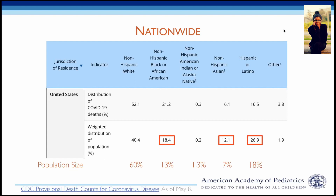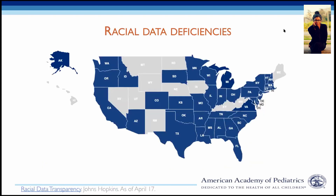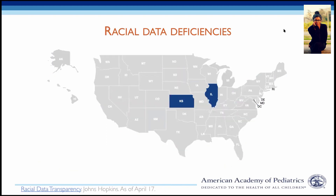Looking nationally at CDC data available by race or ethnicity, stark inequities emerge: African American, Asian, and Latinx populations have disproportionately higher rates of COVID-19 deaths than their proportion of the general population. The findings are most stark for African Americans, so we will have a particular focus on those populations today. However, existing data is incomplete — racial and ethnic data is missing in more than 50 percent of federally reported cases.